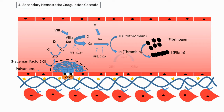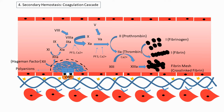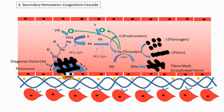Another function of thrombin is to activate factor 13 in the presence of calcium. Activated factor 13 cross-links the fibrin threads produced by thrombin, resulting in a fibrin mesh that is placed over the platelet plug, finally completing the blood clot and making it stronger so it does not get dislodged. Additionally, thrombin goes back to activate factors 5 and 8, providing positive feedback to form the blood clot as quickly as possible.